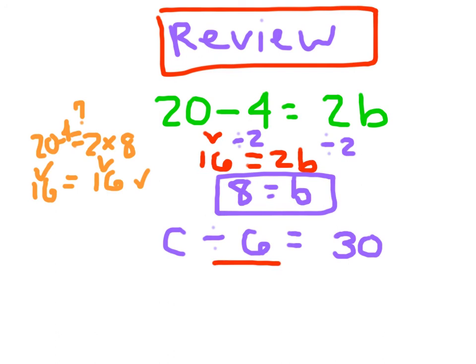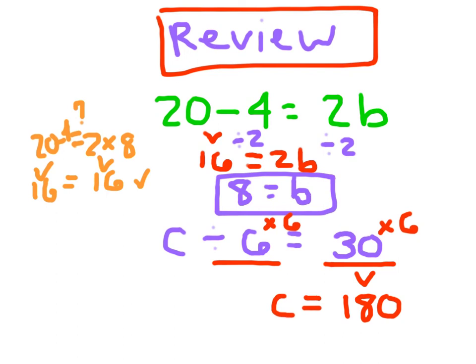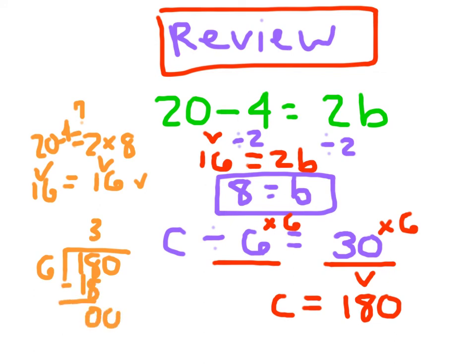For the other problem, inverse operation is your key. This is already simplified, so divided by 6 — the inverse is times 6 on both sides of the equation. 30 times 6 is 180, and C divided by 6 times 6 is just C, so C equals 180. Check: 180 divided by 6 — 6 can't go into 1, 6 goes into 18 three times, that gives 18, remainder 0, bring down the 0, 0 divided by 6 is 0. So 180 divided by 6 equals 30, and it checks out.